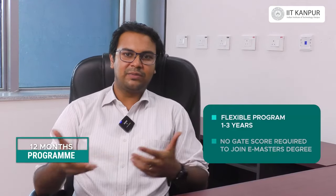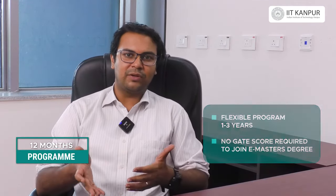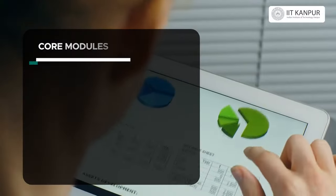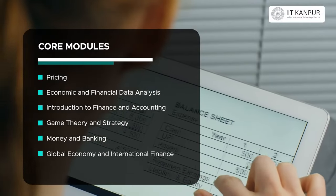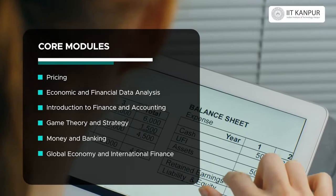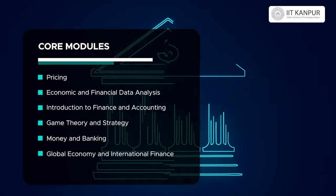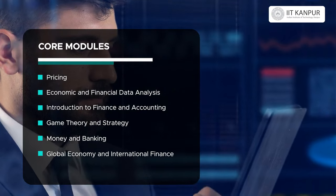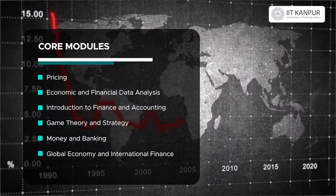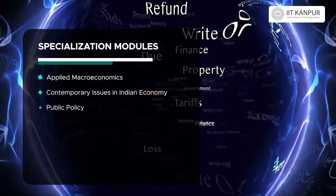Each of these programs has four courses covering finance and accounting, money and banking, pricing, game theory, statistics, data analysis, and global economy and international finance. After the four modules, you are required to take specialization requirements for your master's.